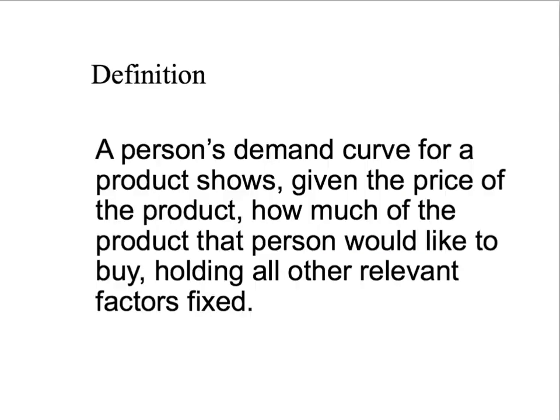Hi and welcome to first year microeconomics. So far we've looked at an individual person's demand curve. Just to remind you of the definition: a person's demand curve for a product — and our product here is apples — shows, given the price (note that it's got our price-taking assumption built in), how much of the product that person would like to buy. Remember, the demand curve tells you what you would plan to do or would like to do, not what you may be able to achieve — holding all other relevant factors fixed. In the last presentation, we looked at what happened to demand when we changed those other factors, such as the price of other goods and the person's income.